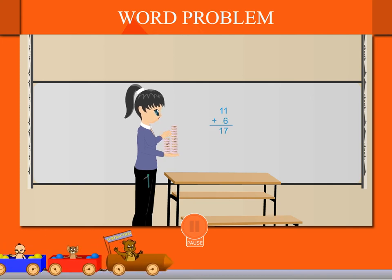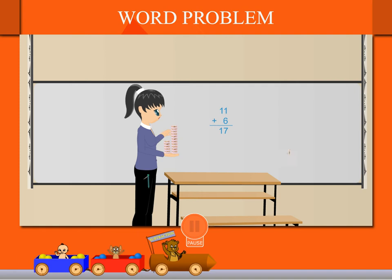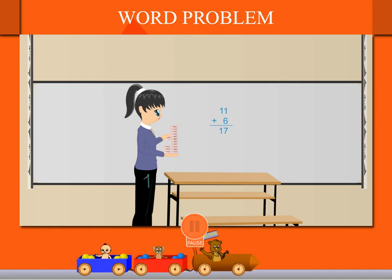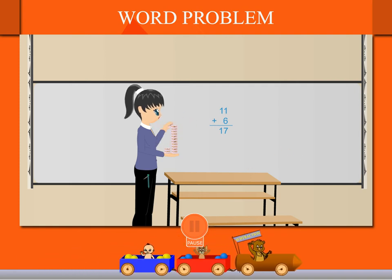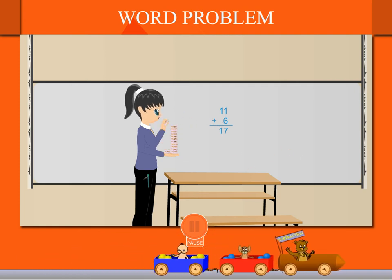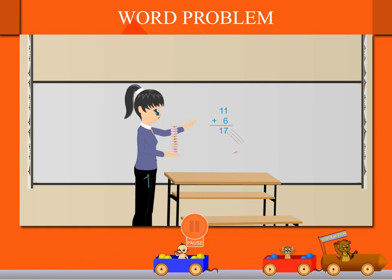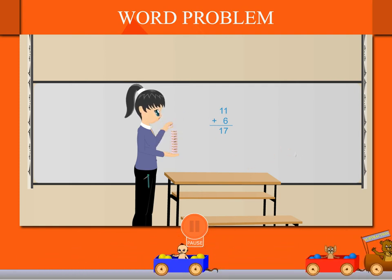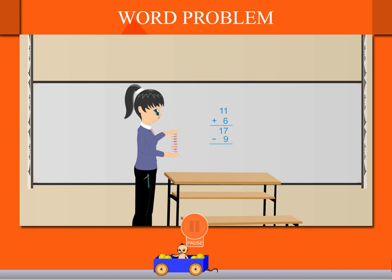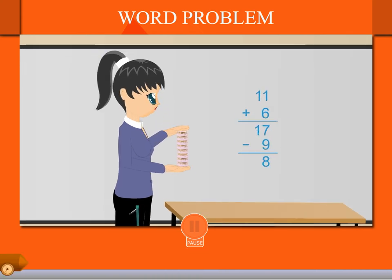Teacher Nancy now throws away 9 bangles from her palm. How many does she have on her palm? It is 17 minus 9 — that is 8 bangles.